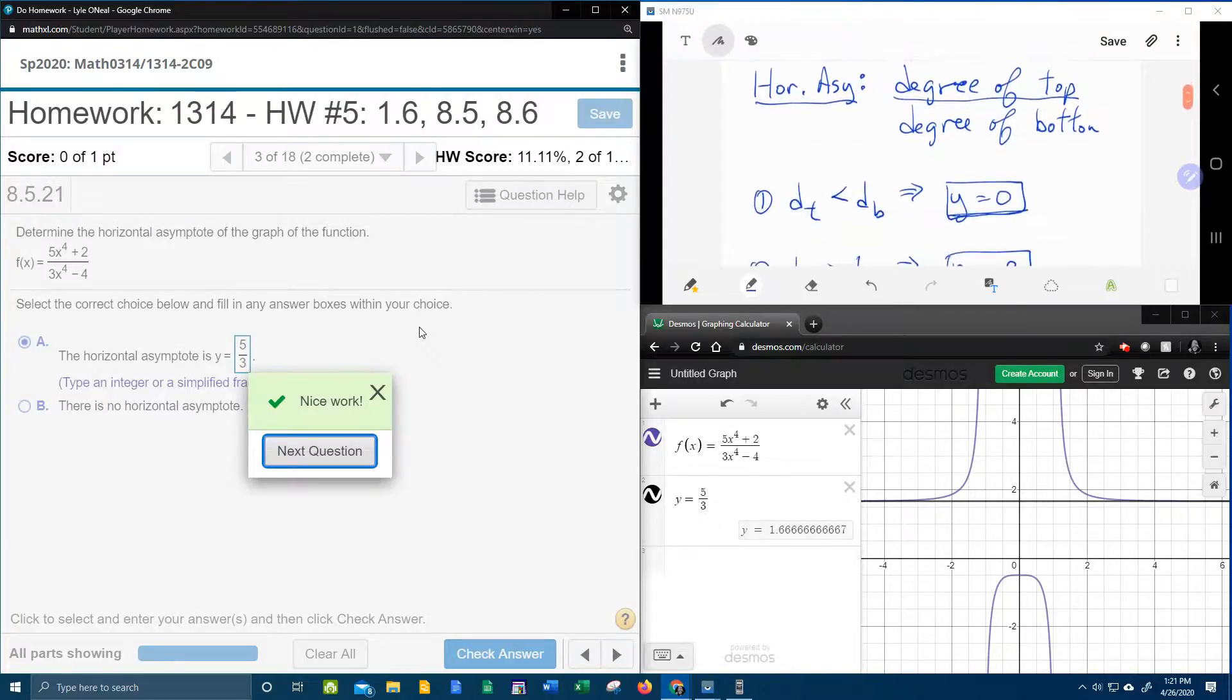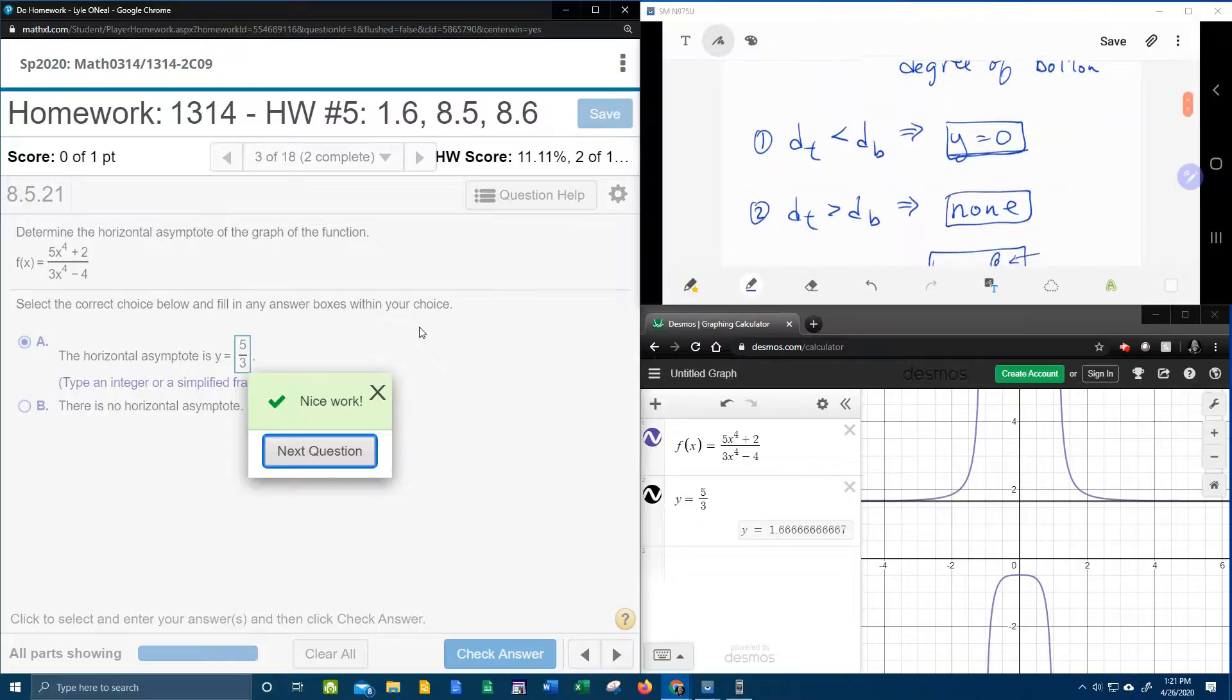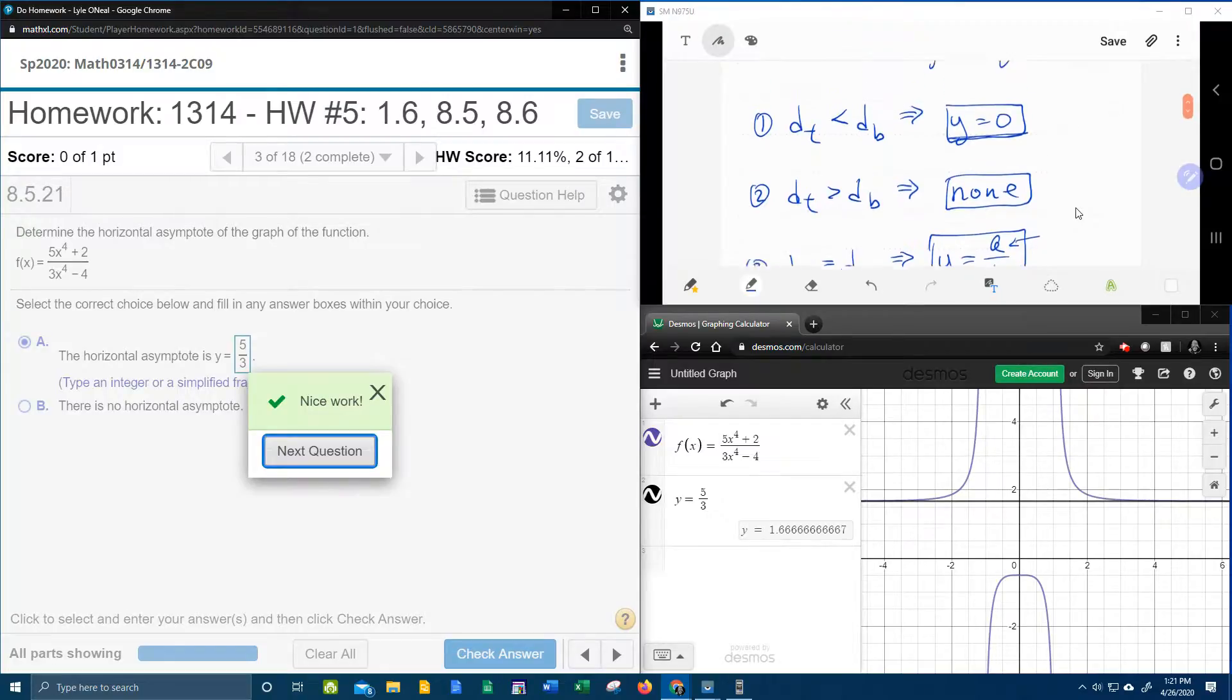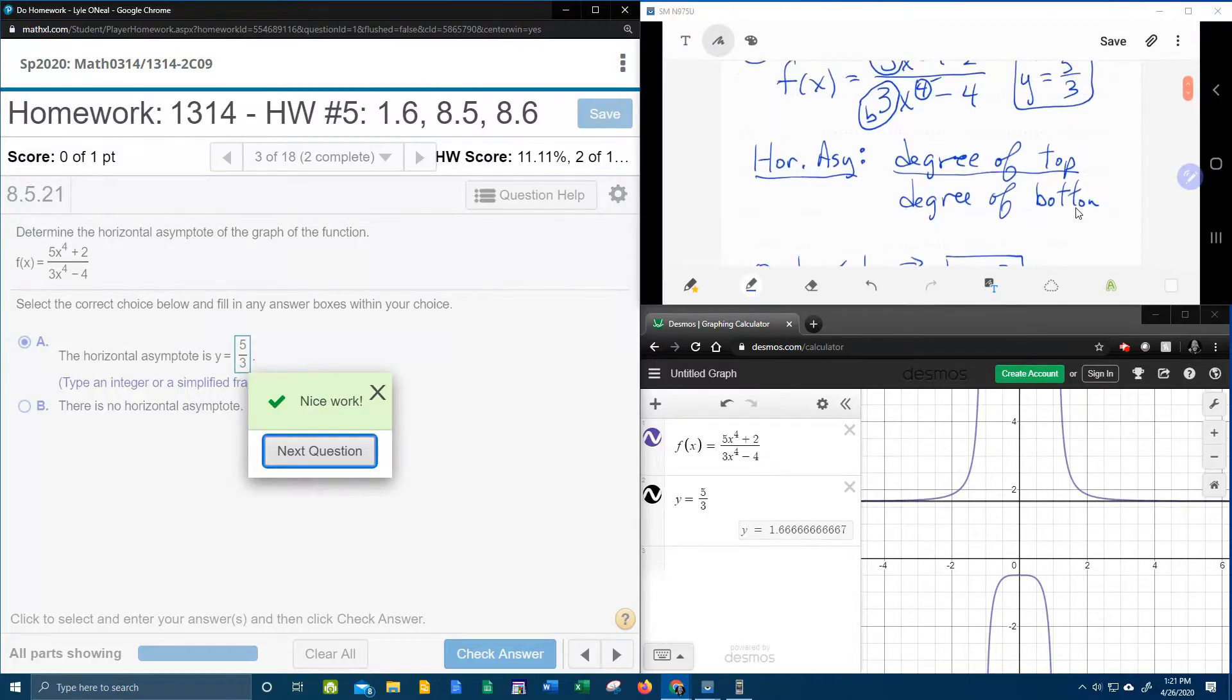If you need to go back and review this, remember here are the three scenarios up here for what your horizontal asymptote could be based on the relationship of the degree of the top and the degree of the bottom. I hope that was helpful. If you have any questions or comments, feel free to leave them in the comment section below. Or you can text me. And thanks for watching.